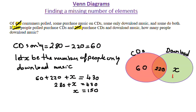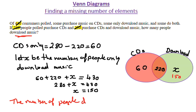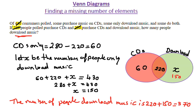But is that the answer to the question? No, that's not it. The question was how many people download music — they didn't say only. This means they want the total number of people within the entire download music circle. So the number of people who download music is 220 plus 150, which equals 370. I wrote 370 because they did not say only. If they said only, it means they want people in just that group. But because they didn't, they want the total elements in the set of people who download music.